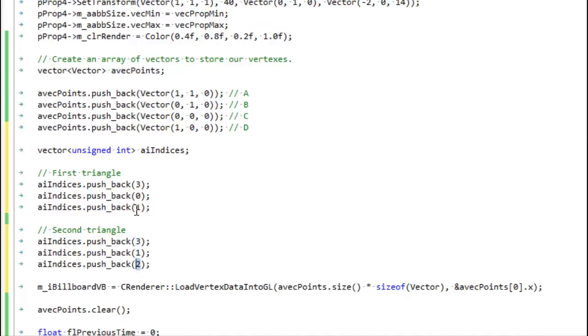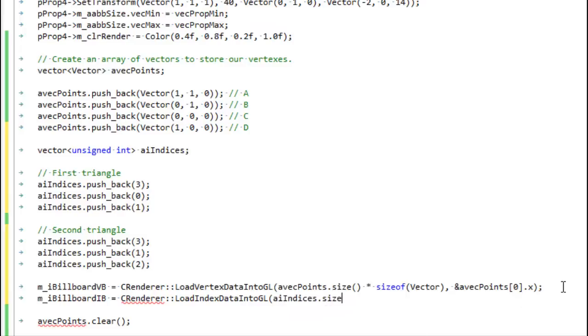And again, these are just the indices into the point array. If you're confused about what these numbers mean, check out the first half of the video again. Now we have our index list and we have to load it into the video card the same way we loaded our other list. Render load index data - indices size times size of an unsigned int, and then we're going to give it the address of this data.